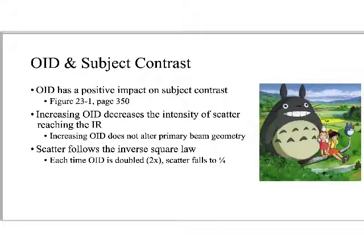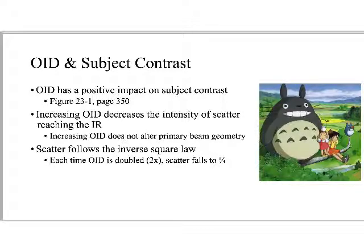This is really important to know about scatter: it follows the inverse square law. So we can actually calculate the amount that OID would decrease scatter reaching the image receptor, given a small enough field size. Each time the OID is doubled, scatter falls to one-fourth — the intensity is decreased by two-squared, meaning it's one over four, or quartered.